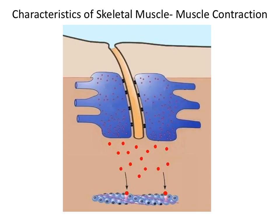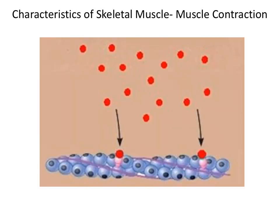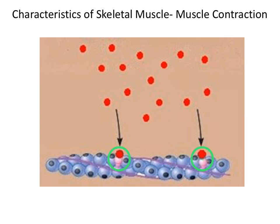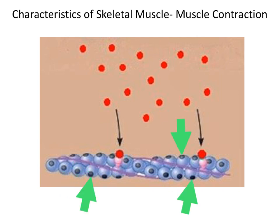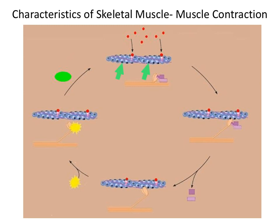The calcium ions that diffuse out of the terminal cisternae move into the sarcomere and bind to troponin, which is a part of the actin myofilament. By calcium binding to troponin, troponin changes configuration, pulls on tropomyosin, and exposes the active binding site of G-actin. Exposure of the active binding site allows the head of the myosin myofilament to bind to it.